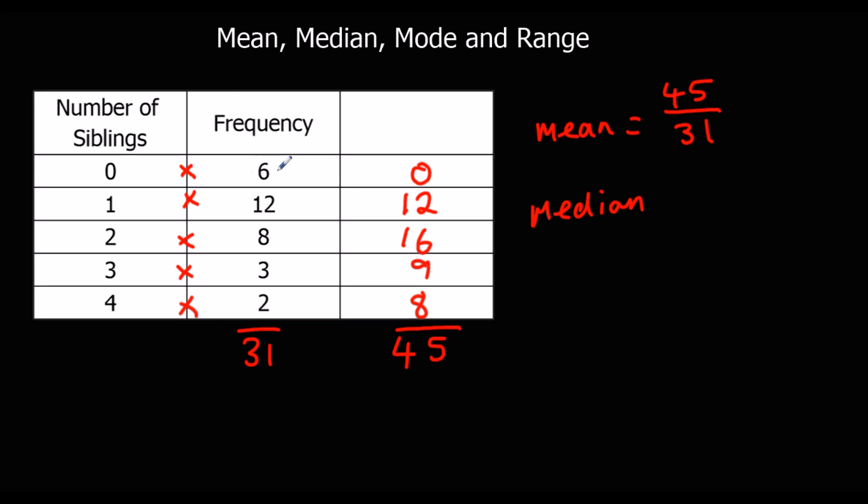There's 6 in there, so between the zeros and ones we go up to 18. So it's in the 1 box again, so the median is 1.